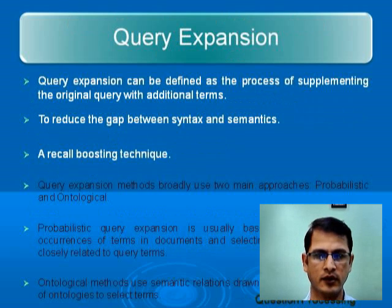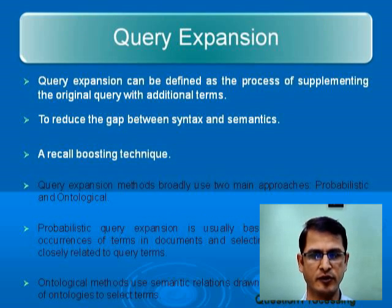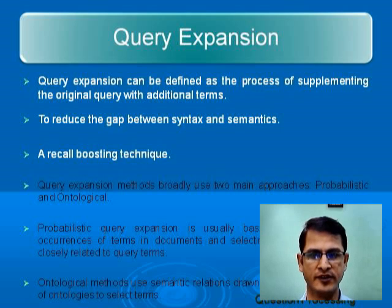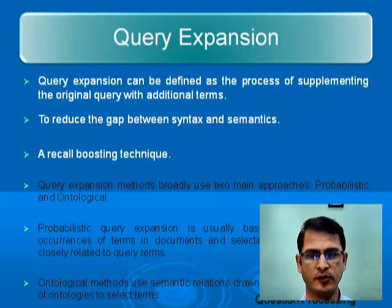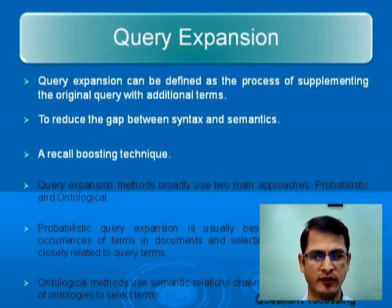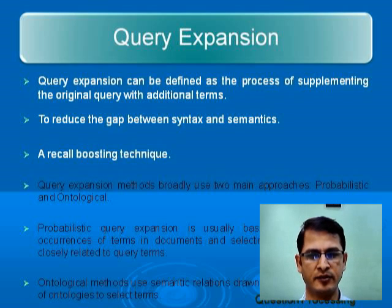The next sub-phase of question processing is query expansion. Query expansion can be defined as the process of supplementing the original query with additional terms. The main aim of query expansion is to reduce the gap between syntax and semantics. Query expansion can be done in two ways: probabilistic approach and ontological approach. The probabilistic approach finds terms related to each other in the document based on the probability of co-occurrence. Ontological methods determine the semantic relationship between terms using ontology and find related words.